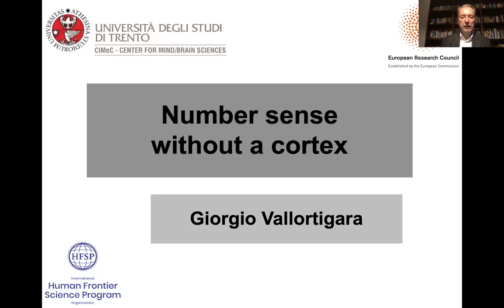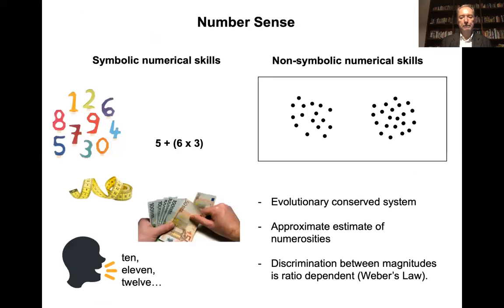I would like to talk today of the number sense in animals without a cortex. You are all familiar with the idea that other than the symbolic numerical skills, which are probably a uniquely human cultural invention, there is a pre-symbolic and pre-verbal system which is evolutionary conserved, the so-called approximate number system, which serves to estimate numerosities or in general quantities, both continuous or discrete, countable, in an approximate way.